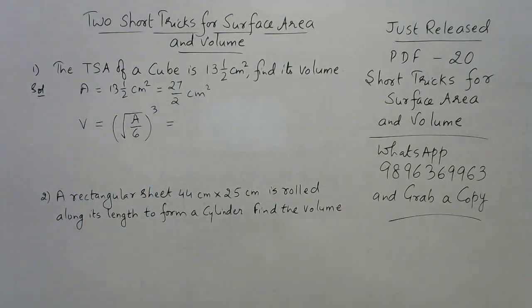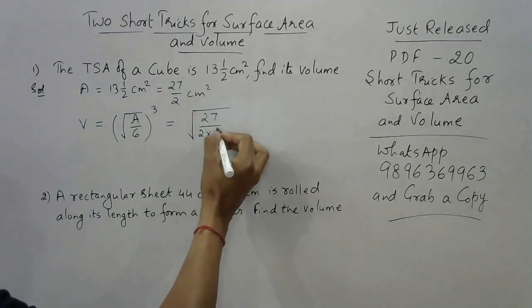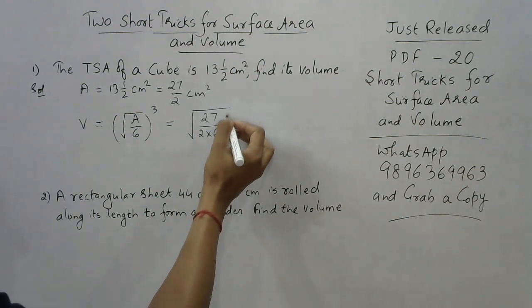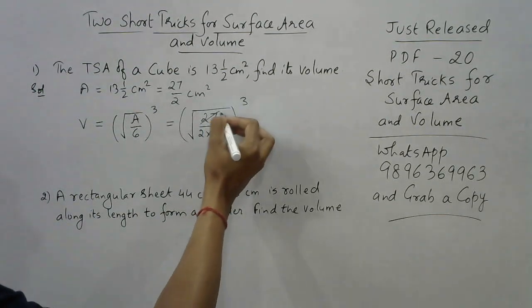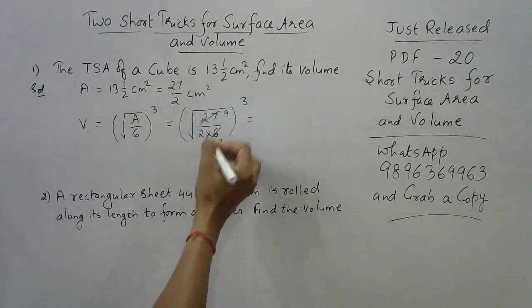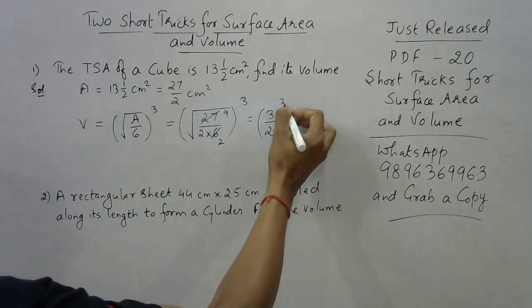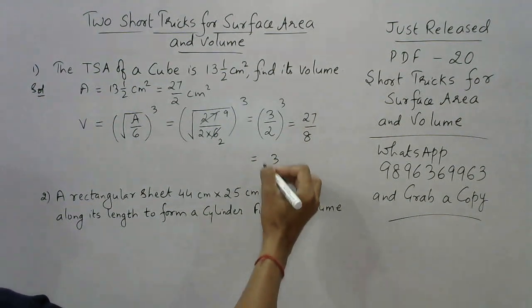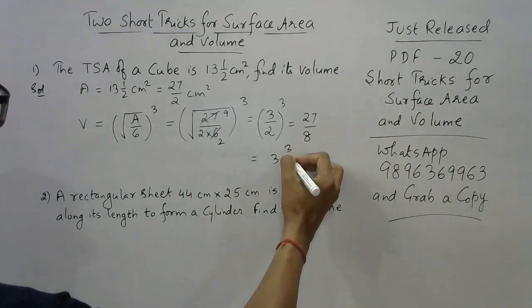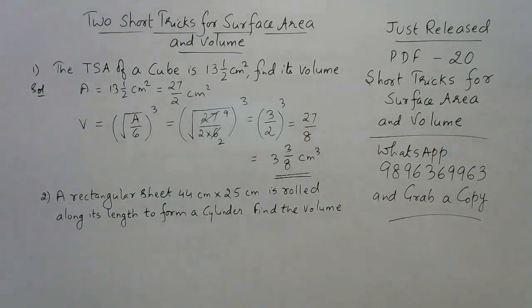Let's substitute the values: under root 27 by 2 into 6, and then we need to cube this. There's a common factor 3 here, so this becomes 2, this becomes 9. The square root of 9 upon 4 is 3 upon 2, and then we have a cube. So your answer will be 27 upon 8, or 3 and 3/8 centimeter cube.